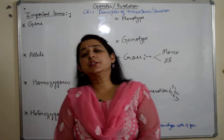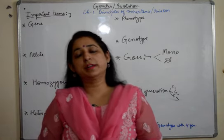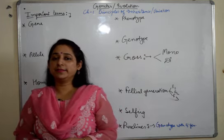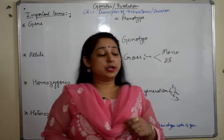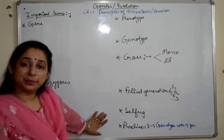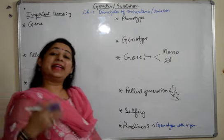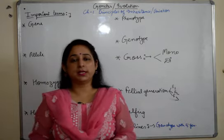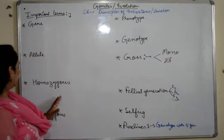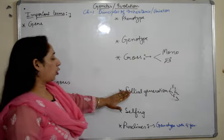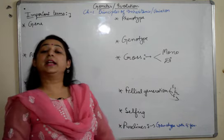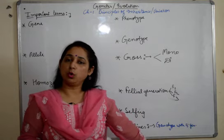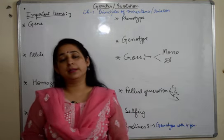Hello everyone. This video is in continuation to our series on genetics and evolution for grade 12. We have started Chapter 1: Inheritance and Principles of Inheritance and Variation. We are going to talk about the important terms in the chapter — terms which are going to come again and again. Once you are clear on these terms, you won't face any problem going further. We will discuss gene, allele, homozygous, heterozygous, phenotype, genotype, cross, filial generation, selfing, and pure lines. Please watch the video till the end because you will get all the important pointers related to all these terms, which you can use for your notes.